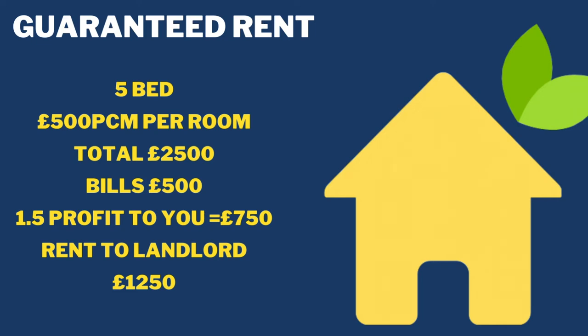With a four to six-bed property, you use something called the 1.5 rule — so your profit is one and a half rooms per month. For this example the profit would be £750 and the bills are £500. With guaranteed rent you would have all of the bills in your name — take that into account. The rent to the landlord would be £1,250. The trouble with guaranteed rent is if the property is empty, you still have to pay the landlord the guaranteed rent of £1,250. That can create a lot of pressure. I know one of my friends had a guaranteed rent per month of about £35,000 — that's a hell of a lot of pressure. So I don't particularly like guaranteed rent.